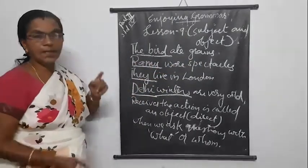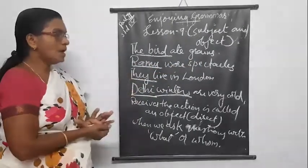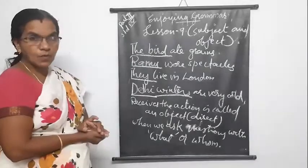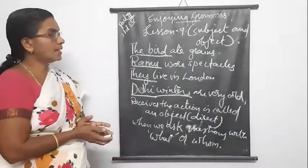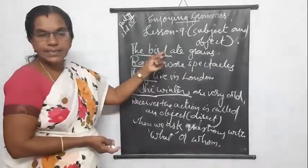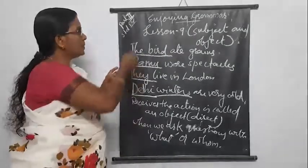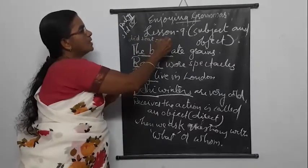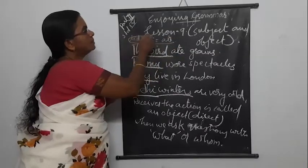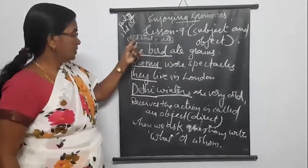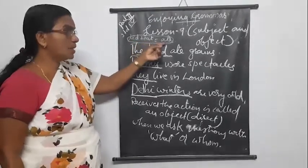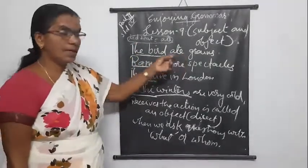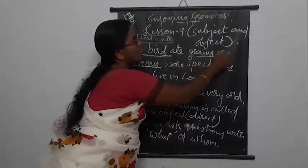Now we will see the object. What did the bird eat? The bird ate grains. What did the bird eat? Grains. So grains is the object.